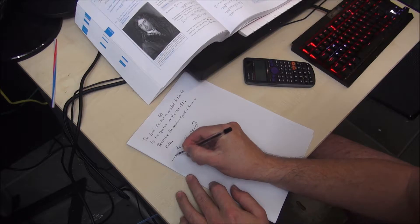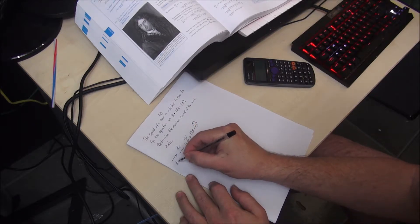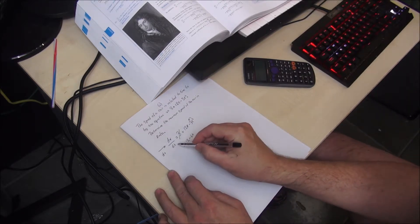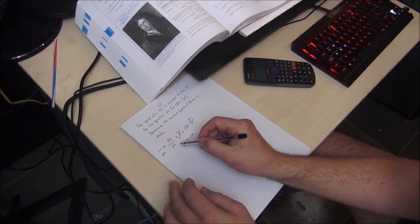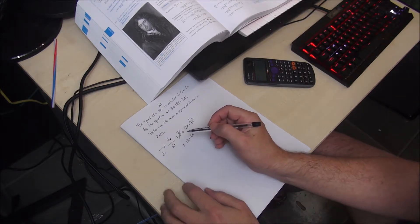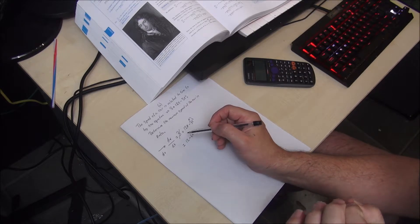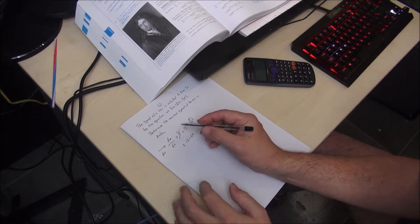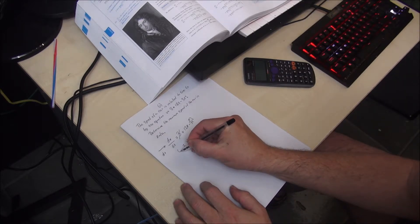Now, as dv approaches 0, so does dt. And as we get closer and closer to 0, we can effectively say that dv divided by dt is equal to 0. It's called the limit.